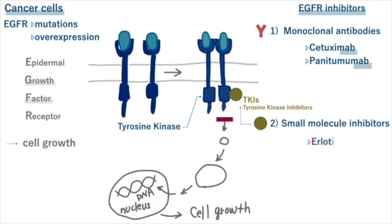Among the notable tyrosine kinase inhibitors are erlotinib, gefitinib, and afatinib. The suffix 'nib' indicates a small molecule inhibitor of kinase enzymes. More specifically, 'tinib' is used for tyrosine kinase inhibitors.